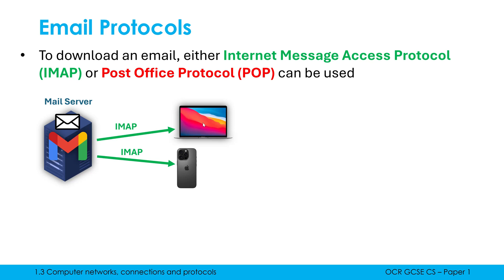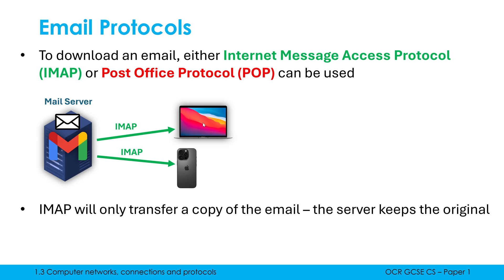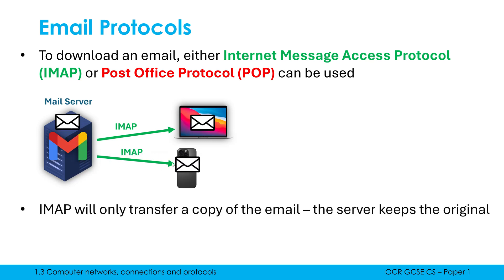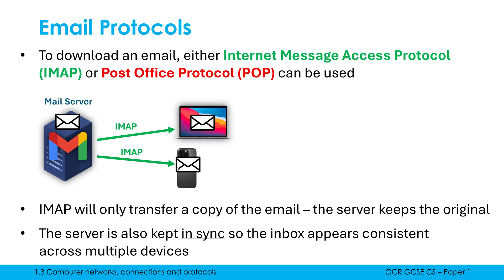As you'll know from your own personal use, you can check your emails on multiple different devices, so clearly POP isn't being used in most cases. Instead, we use IMAP. What IMAP will do is only transfer a copy of the email, and the server will keep the original. So if I go check my emails, IMAP copies the message to my computer but the server retains the original, meaning I'd also be able to check and read that email on my phone. IMAP also keeps the server in sync — the server's copy is kept in sync with my local copy.